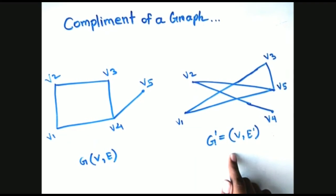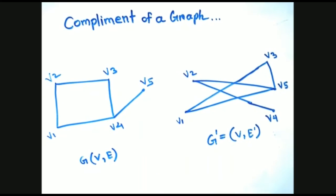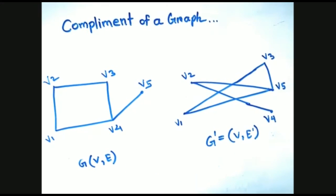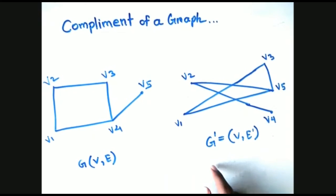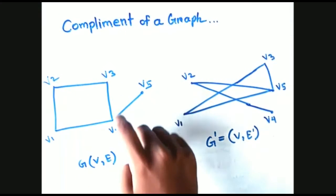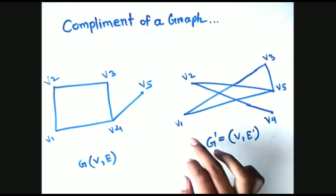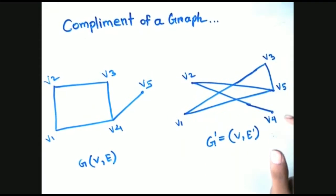We can see in these graphs: vertices v1, v2, v3, v4, and v5 are present in graph G, and vertices v1, v2, v3, v4, v5 are present in G'.